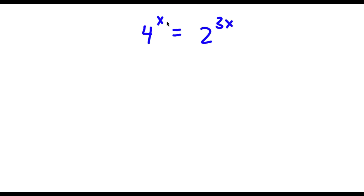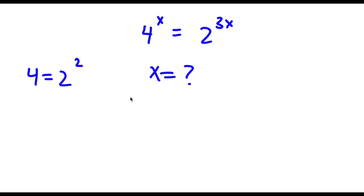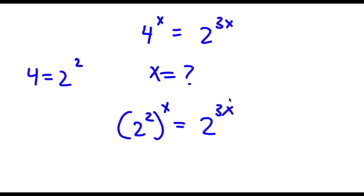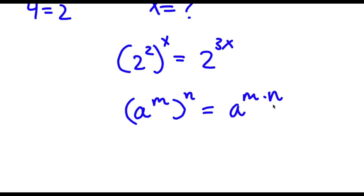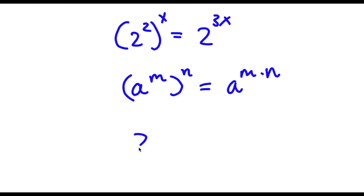Now I have 4 to the power of x is equal to 2 to the power of 3x, and I want to find the value of x. First off, 4 is the same thing as 2 to the power of 2. So if I replace 4 with 2 squared, I get 2 to the power of 2 to the power of x is equal to 2 to the power of 3x. Now, if I have something in the form a to the power of m to the power of n, this equals a to the power of m times n. So 2 to the power of 2 to the power of x becomes 2 to the power of 2x.